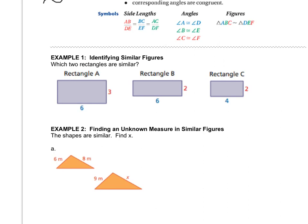So let's do A and B. Is 3 over 6 equivalent to 2 over 6? Is this proportion correct? And the answer is no. So A is not similar to B.